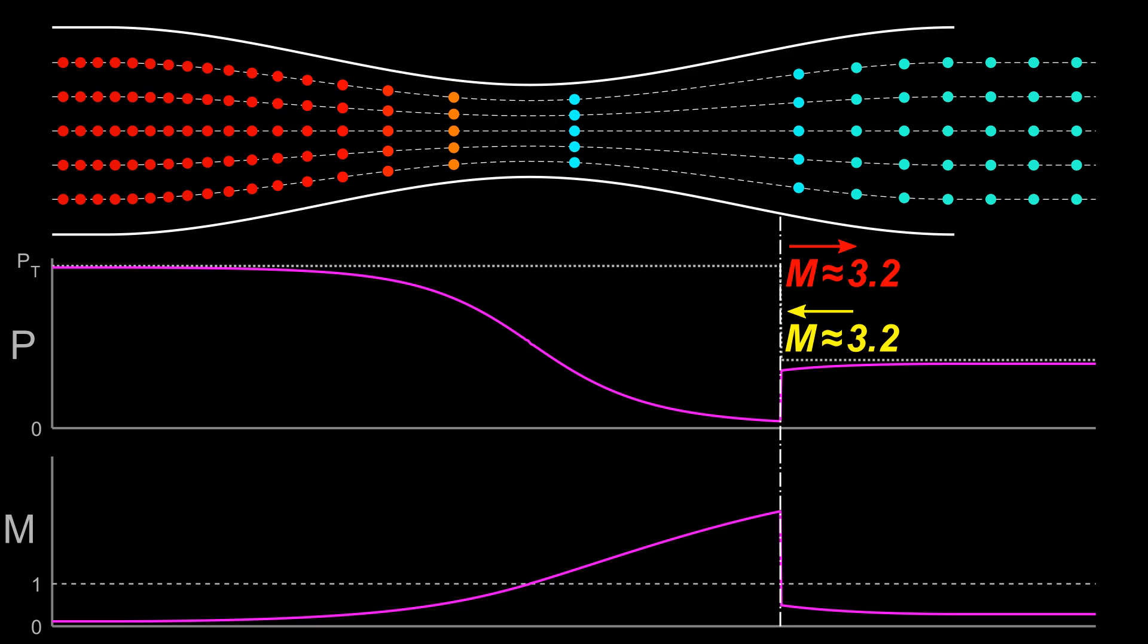Only the shape of the nozzle can do this. The shock position simply determines where the supersonic flow region ends.